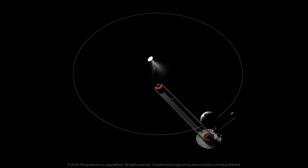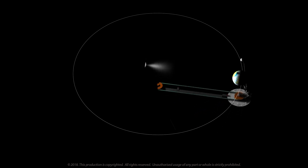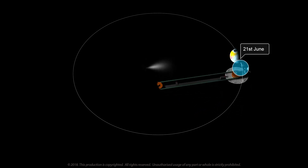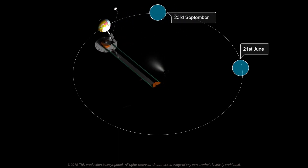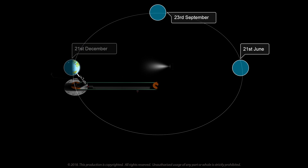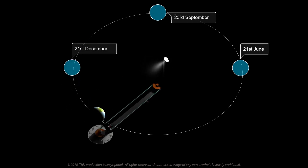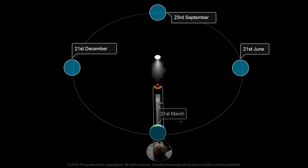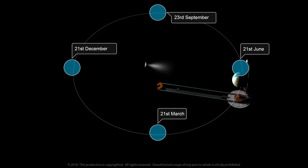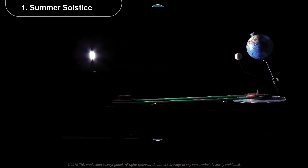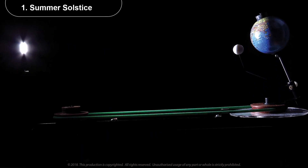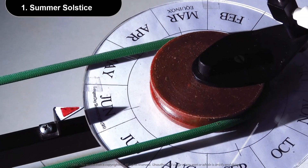Now let us understand the reason behind the change of seasons. Look at the model from the top angle. We'll mark four different positions of earth relative to the sun. The days corresponding to these positions are indicated on screen. Let's discuss these four positions in detail. The first is summer solstice. The model is in the position corresponding to the 21st of June, as indicated by the pointer on the disc.